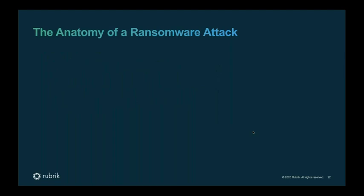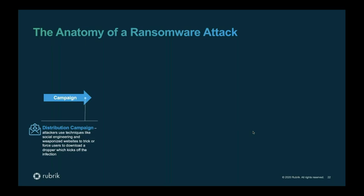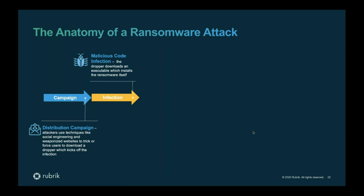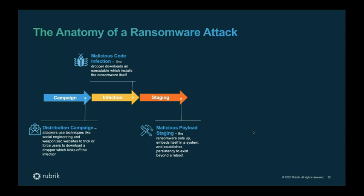Let me walk you through the anatomy of an attack so you understand the typical pattern. Most attacks start with some form of campaign — a social engineering attack or weaponized website — tricking users into downloading a helper application that stages the infection. The infection itself is not actually the ransomware; it's staging applications needed to get the ransomware on the system, compile it, and get it embedded — things like Metasploit, Lazagna-type code prevalent in the industry used as hacking helper tools. Once staged, the ransomware encrypts itself, gets persisted, and often lives dormant for 30, 60, or 90 days, sometimes even longer. The whole purpose is to make sure the infestation is embedded in the backup systems and backup copies.